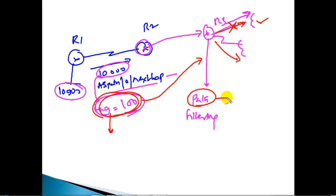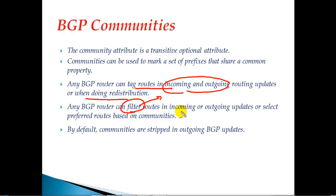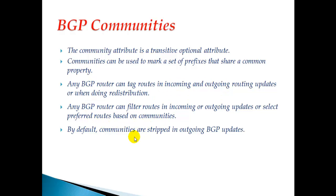Based on that tag, we can do path manipulations like applying local preference, weight attributes, or other attributes. We can also deny specific tagged networks from entering specific autonomous systems. To do this kind of tagging, we use BGP community attributes. Any BGP router can tag routes on incoming or outgoing routing updates, or at the time of redistribution. You can also filter incoming routing updates based on selected preferred routes using community values.